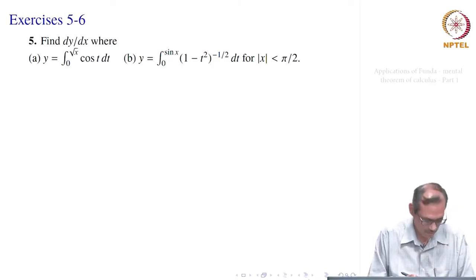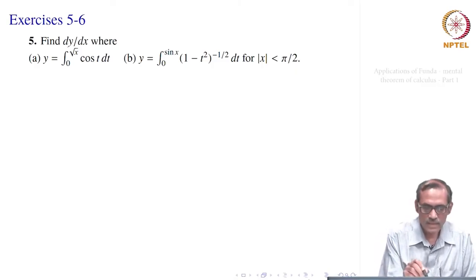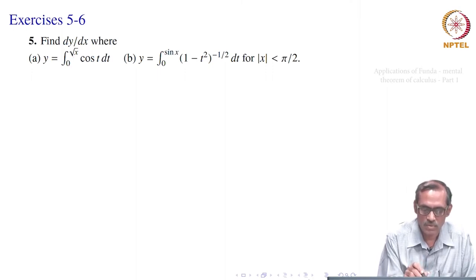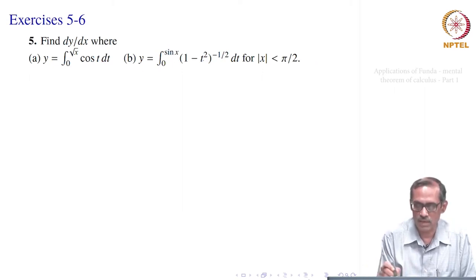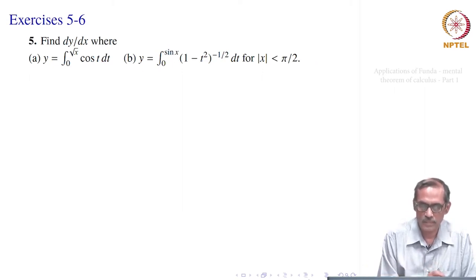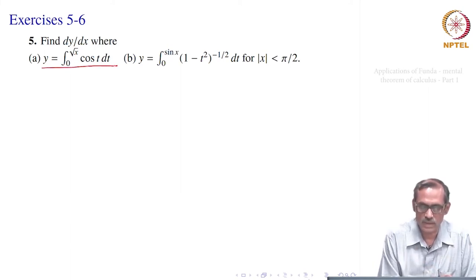Let us take another problem. Find dy by dx, where y is given as the integral from 0 to root x of cos t dt. There are two problems; one more is 0 to sin x. We will come back to that. First, let us see part a. So, y is given as the integral from 0 to root x of cos t dt.